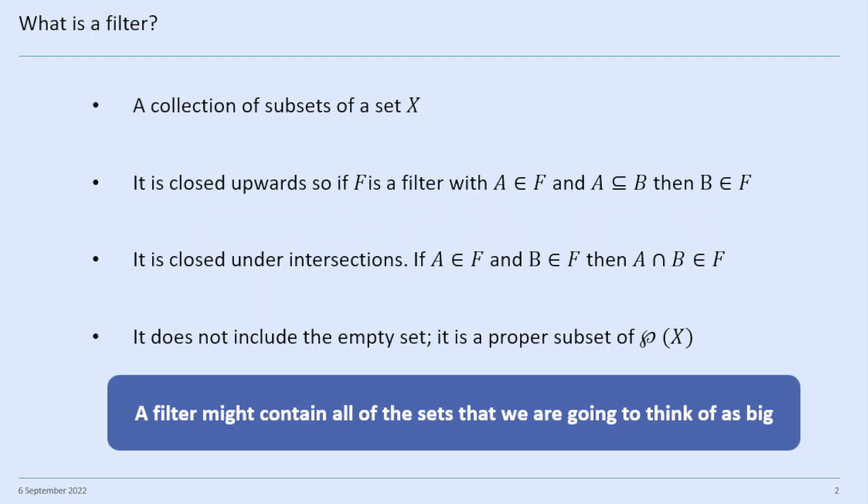So firstly, what is a filter? A filter is a collection of subsets of a set X. It's closed upwards — so if F is a filter and A is in F, then every superset of A is also in F; every bigger set is also in F. It's also closed under intersections: if A is in F and B is in F, then their intersection is also in F.